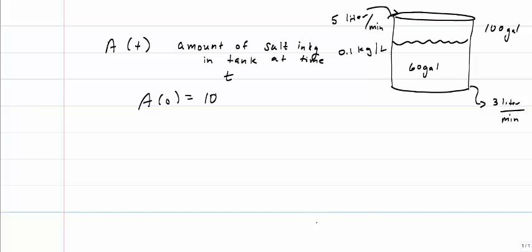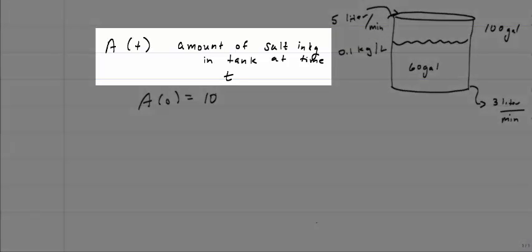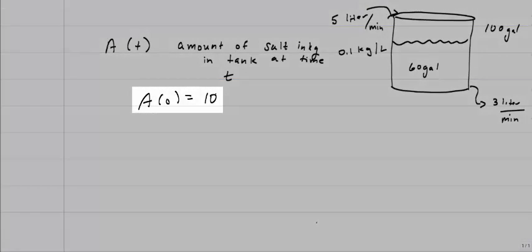What's going in is 5 liters per minute at a concentration of 0.1 kilograms per liter. What's coming out is a rate of 3 liters per minute but we don't know what the concentration is because that's going to change over time. I'm letting A of T be the amount of salt in kilograms in the tank at a particular time T and I know that A0 is equal to 10.